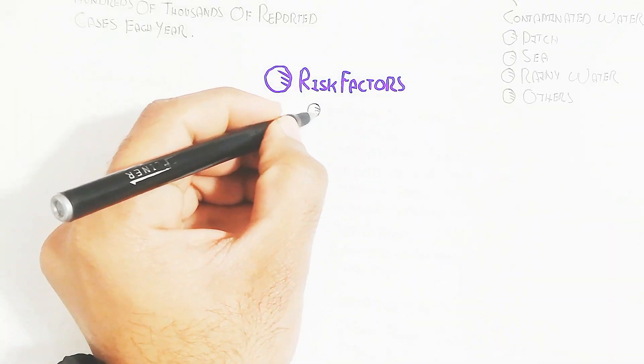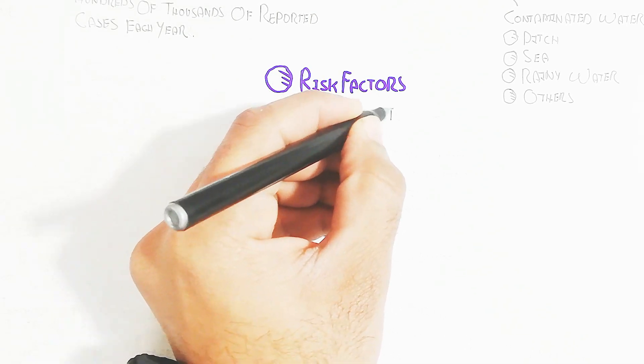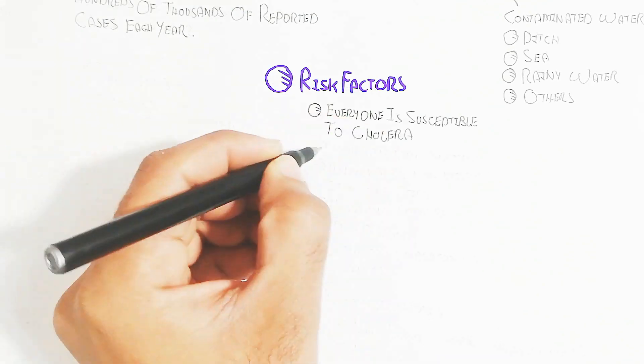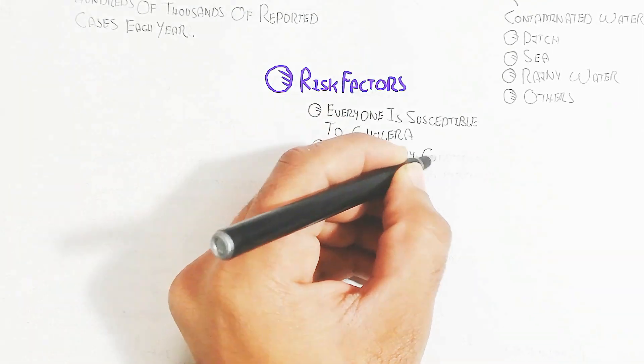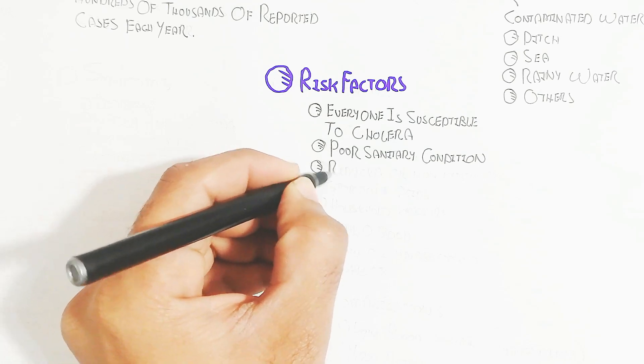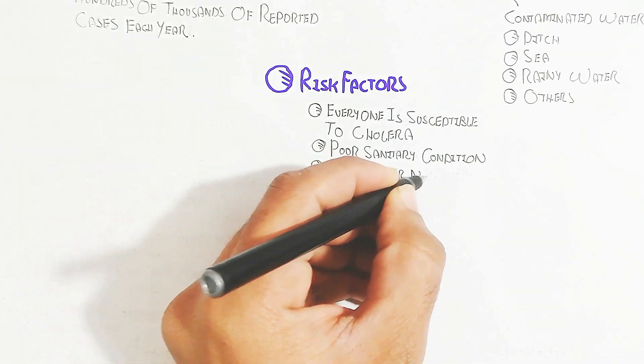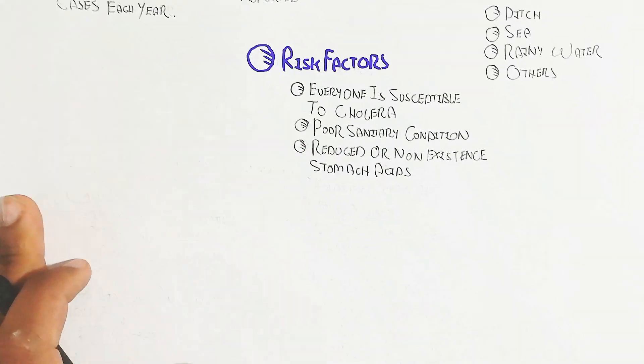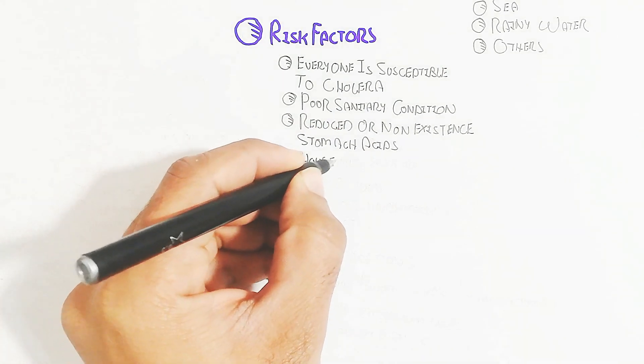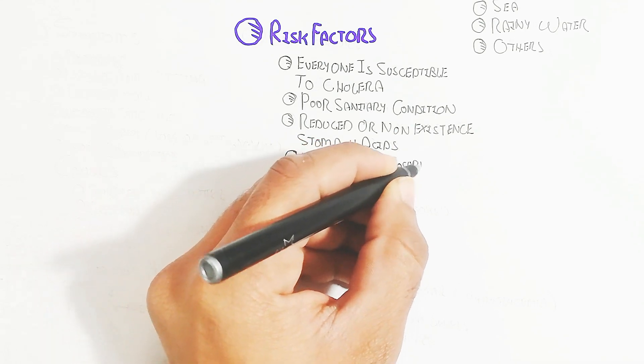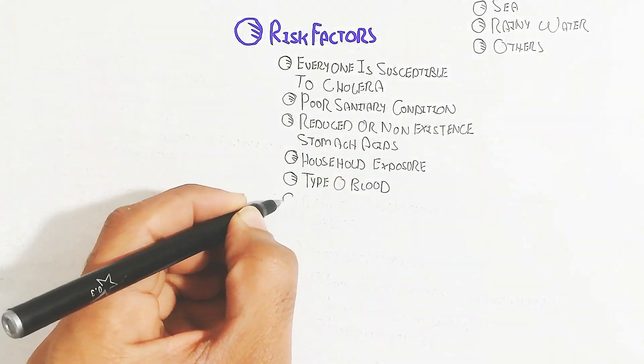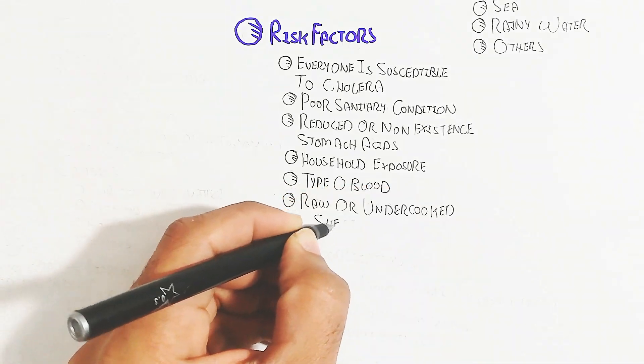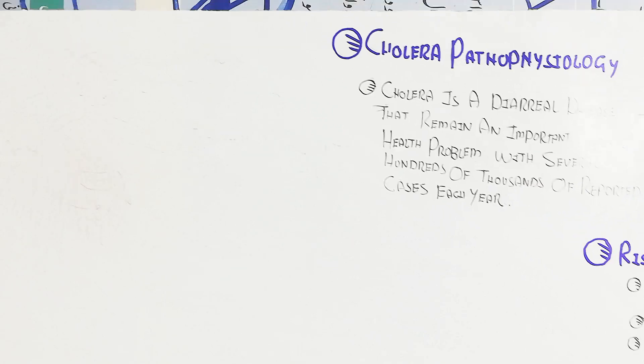The risk factors for cholera infection: everyone is susceptible to cholera. Poor sanitary conditions are a risk factor. Reduced or non-existent stomach acids - when stomach acid is reduced, it cannot kill the cholera bacteria, leading to infection. Other risk factors include household exposure, type O blood, and raw or undercooked shellfish.